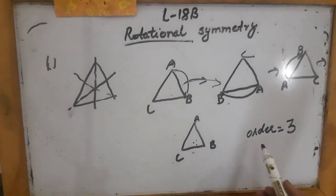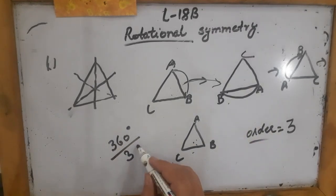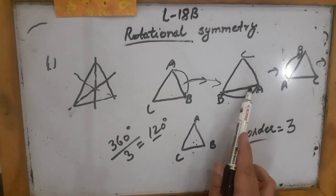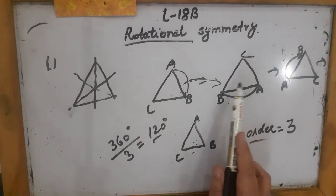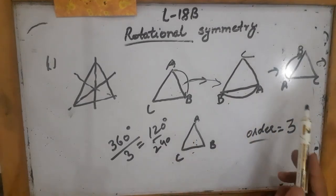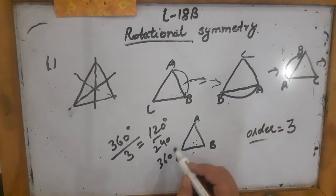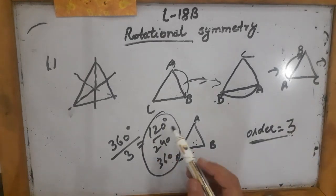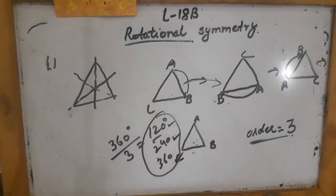Now I know the order. If I divide 360 degrees by the order 3, I get 120 degrees. So it means when you rotated this equilateral triangle at 120 degrees it looked the same, then again at 240 degrees it looked the same, and again at 360 degrees. The order means how many times it looked the same — it looked the same 3 times. The angles of its rotation are 120 degrees, 240 degrees, and 360 degrees.